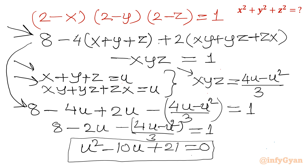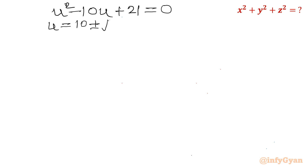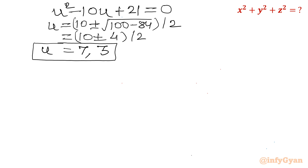Now u is about to be found. Solving u² − 10u + 21 = 0 using the quadratic formula: u = (10 ± √(100 − 84))/2 = (10 ± √16)/2 = (10 ± 4)/2. This gives u = 14/2 = 7 or u = 6/2 = 3. So we have two candidate values: u = 7 and u = 3.